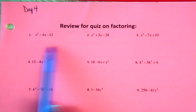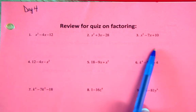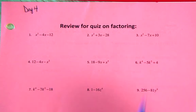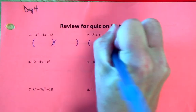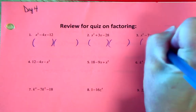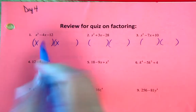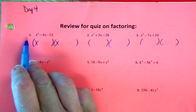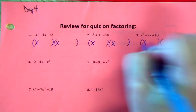Looking at this first row, I don't see any greatest common factor in one, two, or number three. When there is no greatest common factor, we set up our two parentheses. What we put first multiplies to this first term, so x times x is x squared — and that's the same in all of the first row.